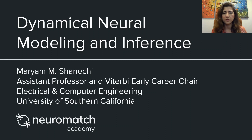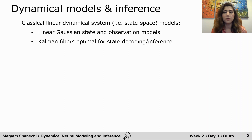What you've seen so far are the classical linear dynamical system models, also referred to as linear state space models, in which both the state and the observation equations are linear and Gaussian. In this case, Kalman filters are actually optimal for state decoding or inference. What I will do in this lecture is to build on these concepts and extend them both to gain neuroscientific insight and to develop neurotechnology.